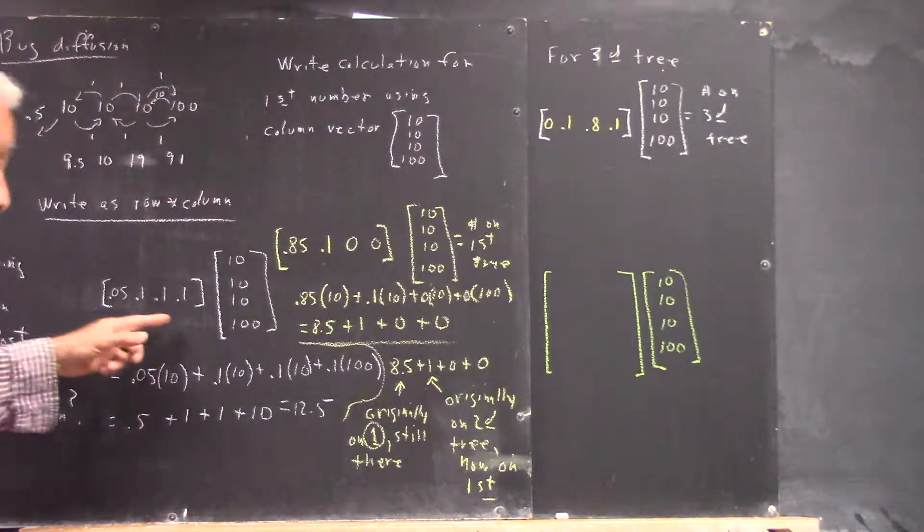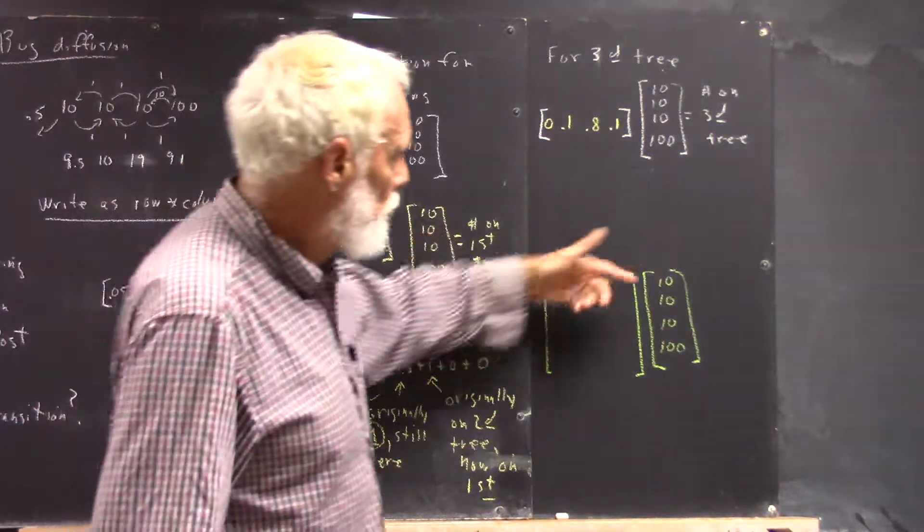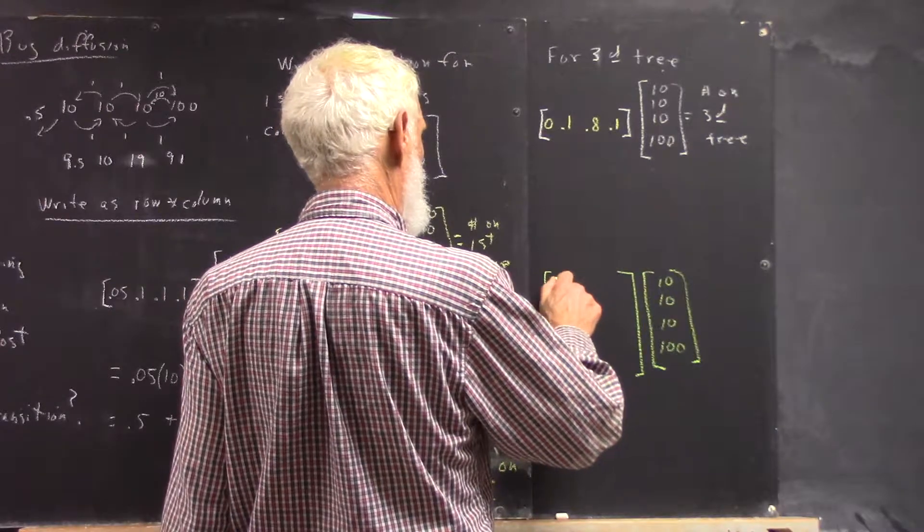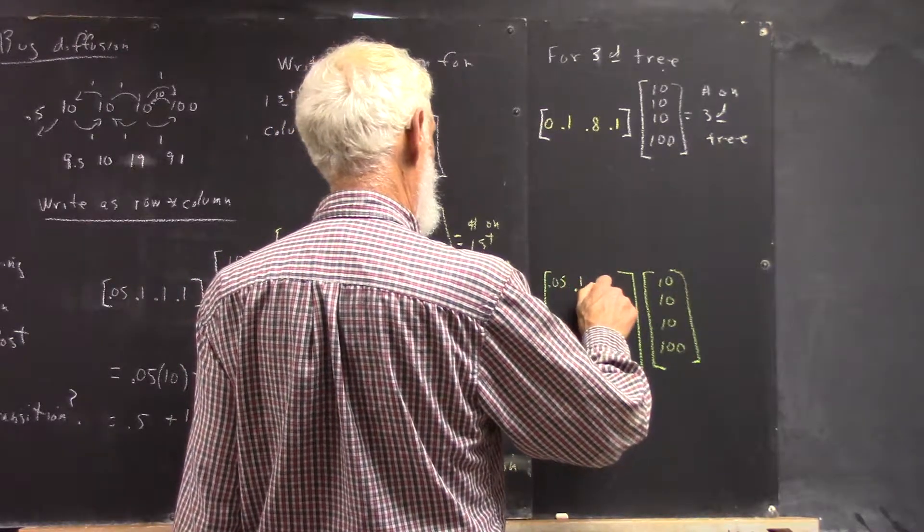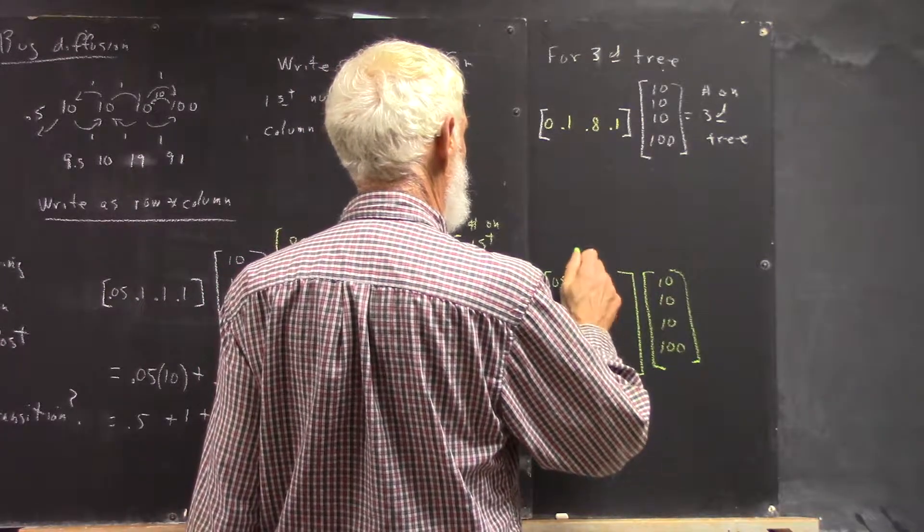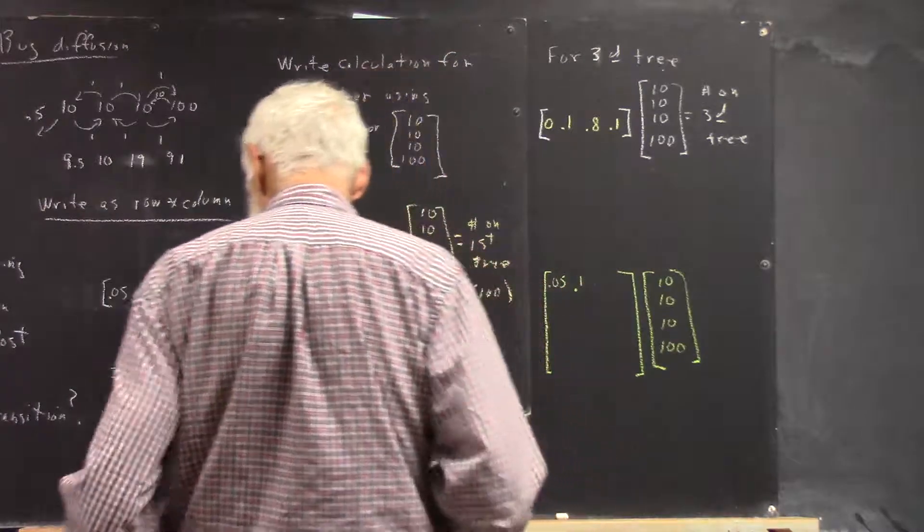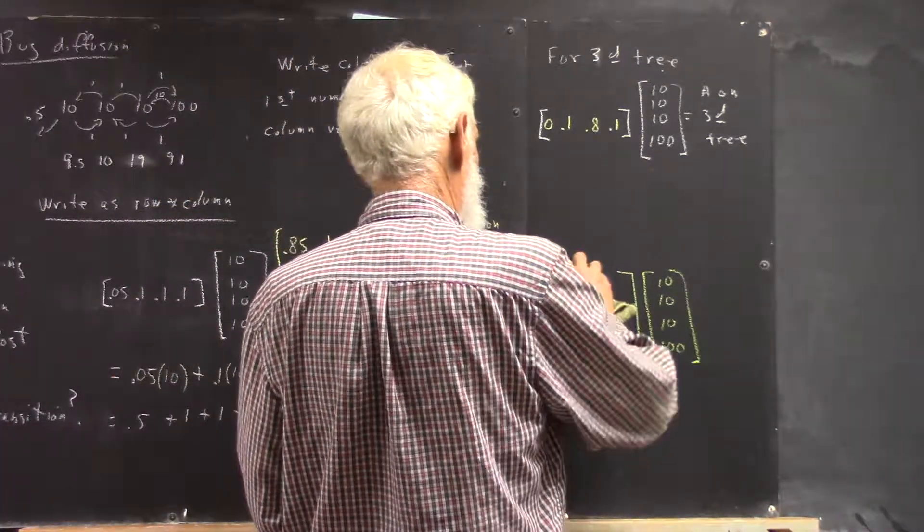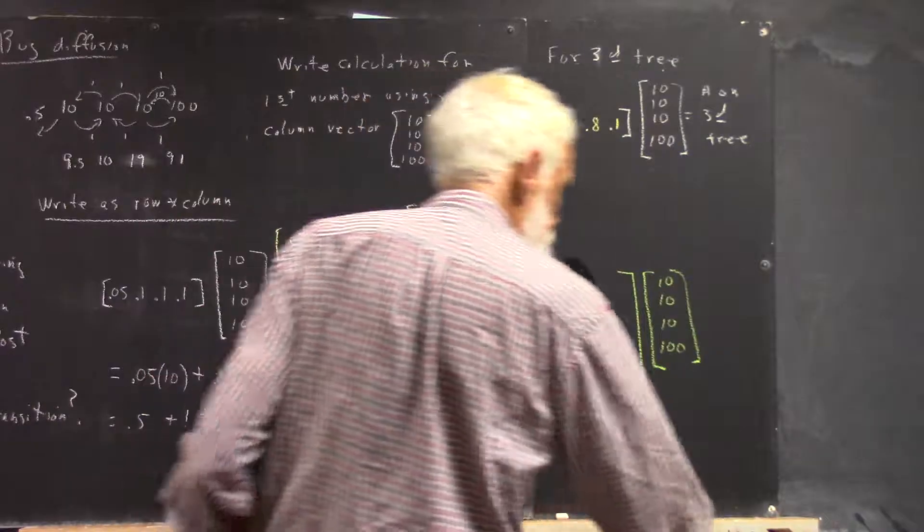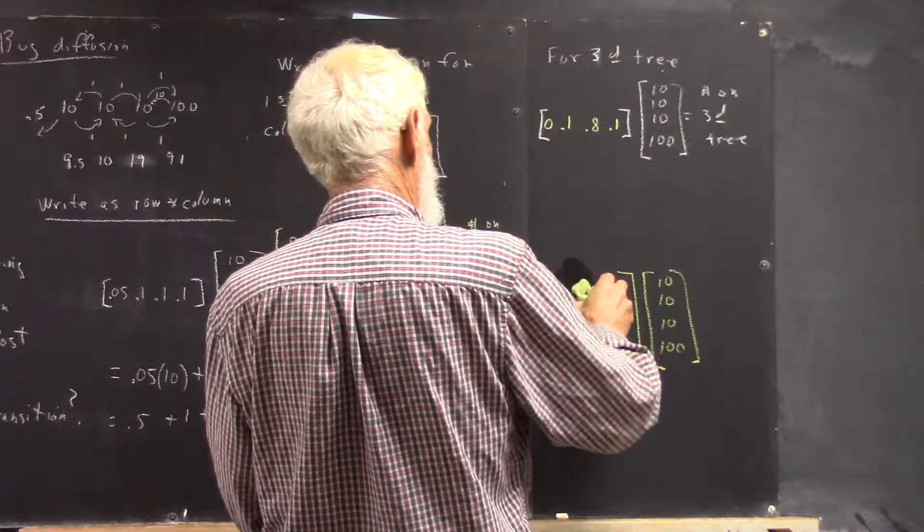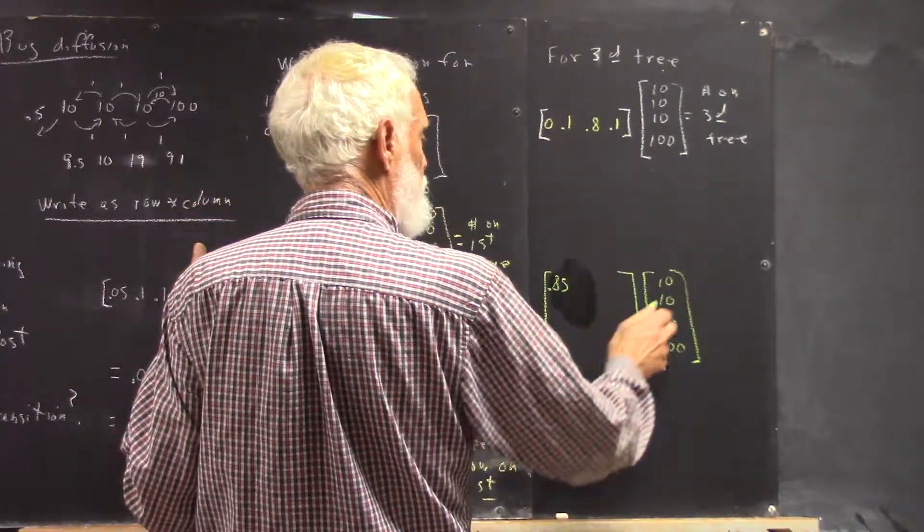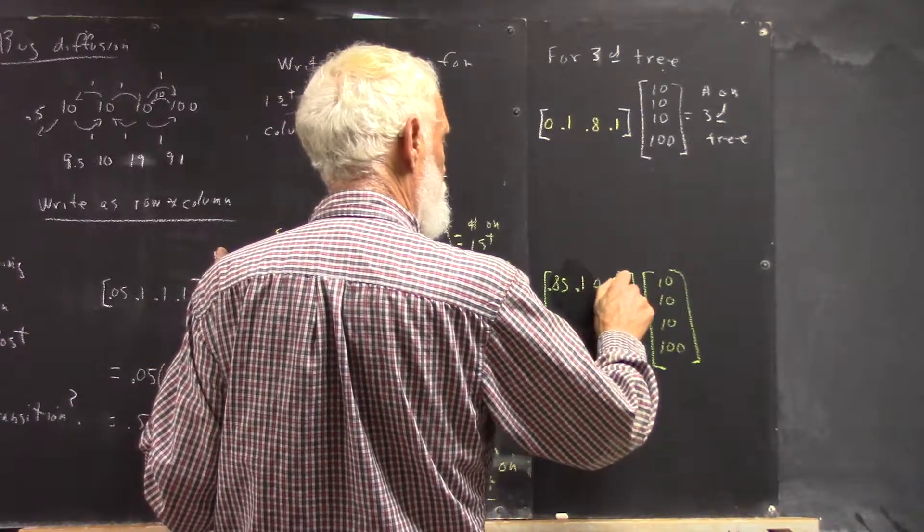So our first row, well, it's going to be this one, because if we multiply our first row by this, we're going to get the number in the first row. So that's going to be our 0.05, 0.1. And then, wait a minute, 0. Yeah, this is, and I was just looking at something, and I wasn't thinking. That's going to be your 0.85, because we're talking about the first row, the first tree. Eighty-five percent of those bugs will stay on the first tree, so we have 0.85 here. Then 10 percent on the second tree will go there, and none from the third or fourth.